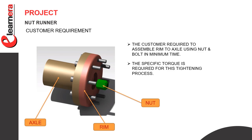The project process starts with a customer RFQ. The customer requires a specific product, so the customer sends an RFQ to multiple suppliers. The supplier makes a concept and sends it to the customer. In this project, the customer wants to build an assembly in less time with proper torque. In this assembly there are two parts — an axle and a rim — assembled using nuts and bolts. The supplier thinks and makes a proper concept for this operation.